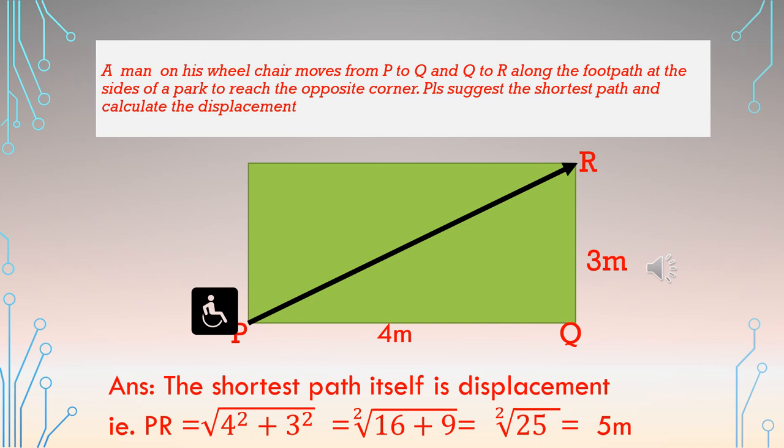If we consider PQR as a right angle triangle, PR is the hypotenuse. Displacement is the hypotenuse of the triangle, equal to the square root of the sum of the squares of the sides — that is square root of 4² plus 3², giving us the answer of 5 meters.